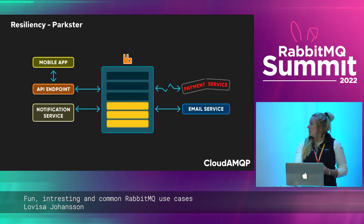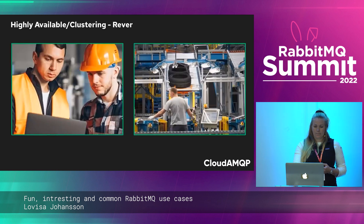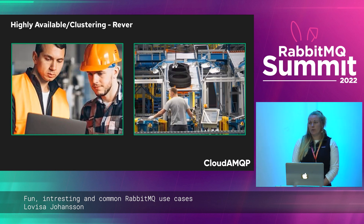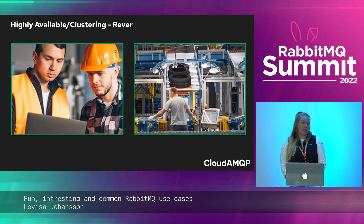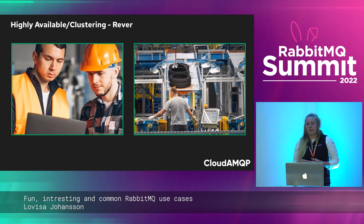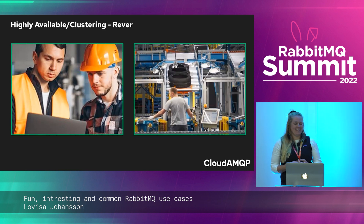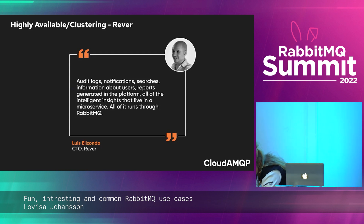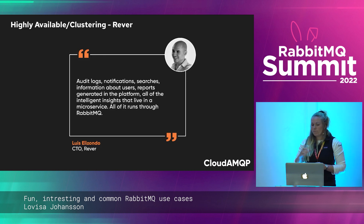This architecture enables a more resilient system. Another company, Revr, identifies and solves issues connected to workflows, mainly in manufacturing. Revr's users bring their app to the factory floor via phone, laptop, or tablet, and all employees can report observations on safety, maintenance issues, quality problems, or improvement ideas in real time. Revr's whole infrastructure is built with RabbitMQ as a base, handling hundreds of thousands of messages back and forth between microservices on a daily basis. Audit logs, notifications, searches, user information, reports generated in the platform, and all intelligent insights that live in a microservice — all of it runs through RabbitMQ.